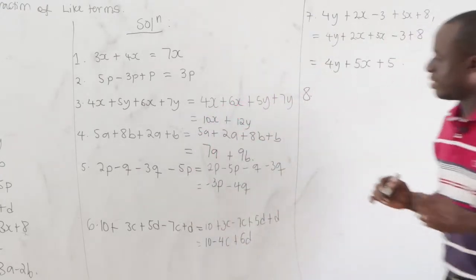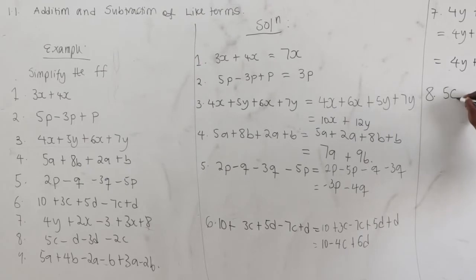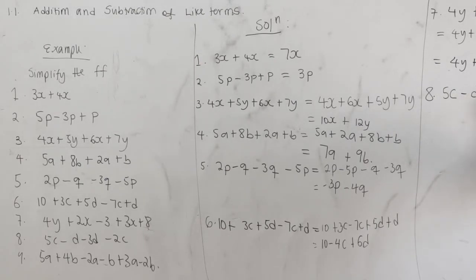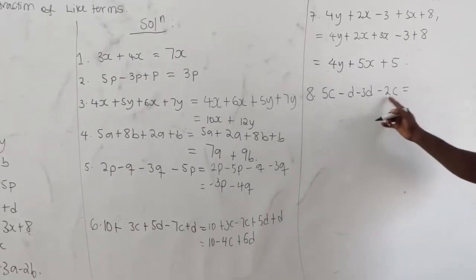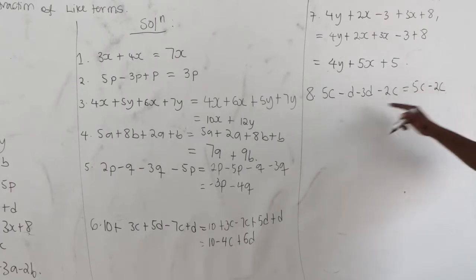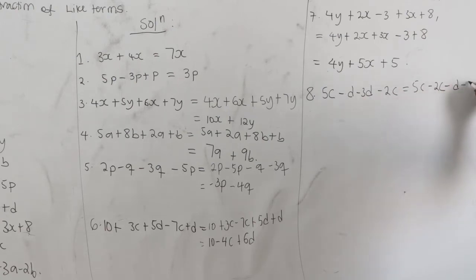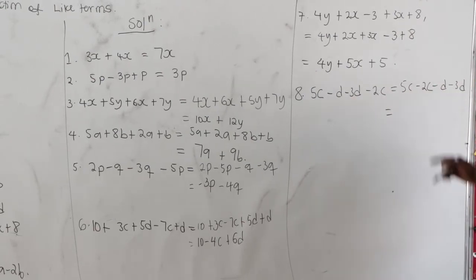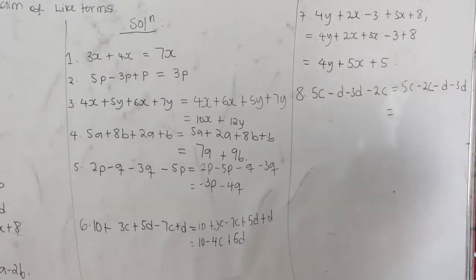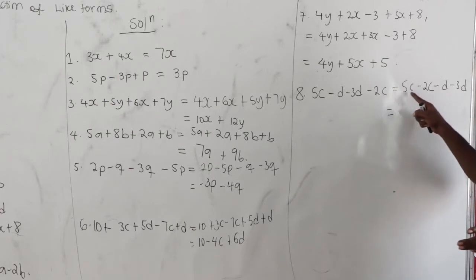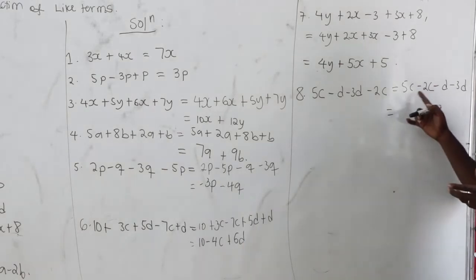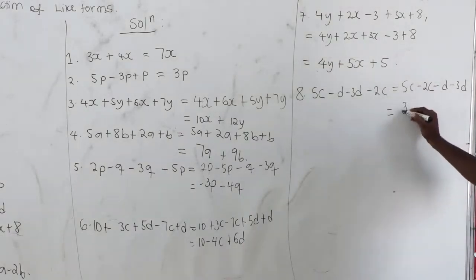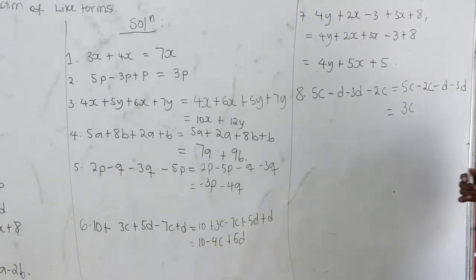Question 8: 5c minus d minus 3d minus 2c. Group like terms: 5c minus 2c equals 3c, and negative d minus 3d equals negative 4d.